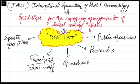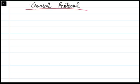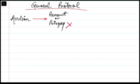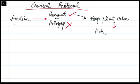Avulsion does not occur in a dental office — it occurs in school, in the field, in sports playgrounds, or at home. These are the people who really need to be more informed about avulsion, and it's our job as dentists to educate them. The general protocol starts with finding out whether the tooth is permanent or primary. If it's primary, discard it right away. If it's permanent, make sure the patient remains calm and pick the tooth by the crown.